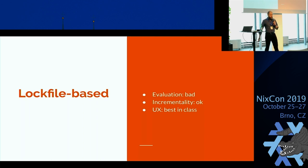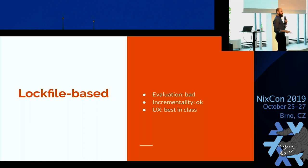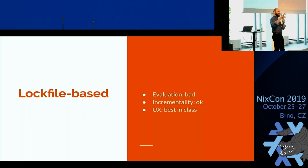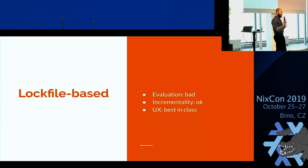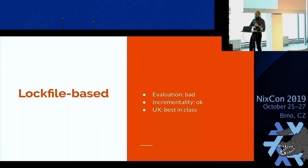The problem with the lock file approach is evaluation. You're asking Nix to parse JSON or TOML lock files, which can impact the evaluator quite a bit — you might have long-running evaluations before any code is built. Incrementality is okay because most of the time you can get per-dependency incrementality: if one dependency changes, Nix just re-pulls that one. If you do things well enough, it can even build the dependency separately so you don't rebuild unaffected ones. In terms of UX, it's basically the best in class — you tell a new user to just run `nix build` and it works.